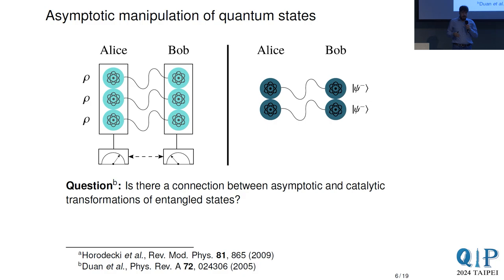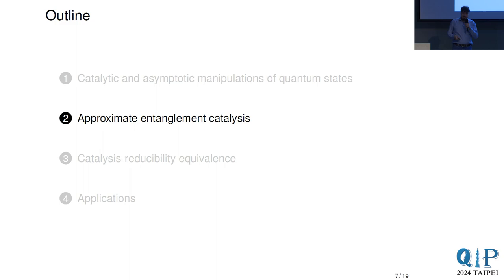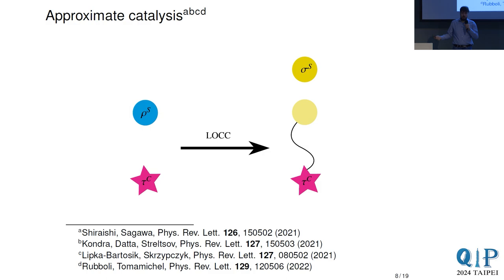The main question for the rest of the talk is: is there a connection between asymptotic and catalytic transformations of entangled states? How are they connected and can we link one to another? To answer this, let us talk about approximate entanglement catalysis, which is a more recent development.